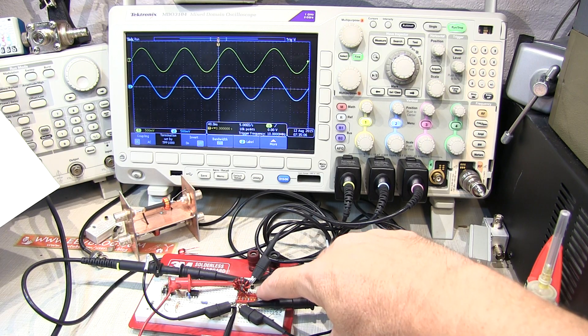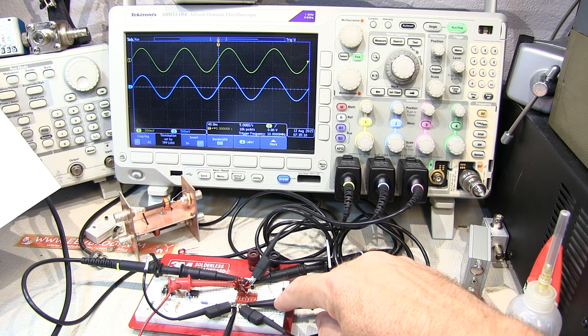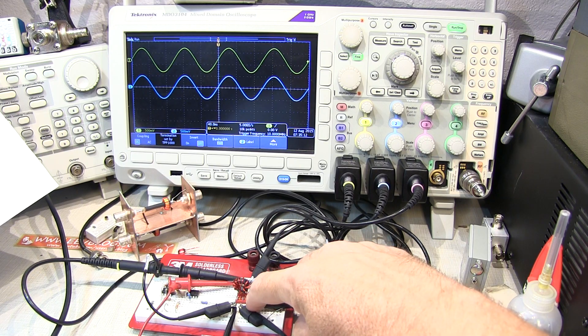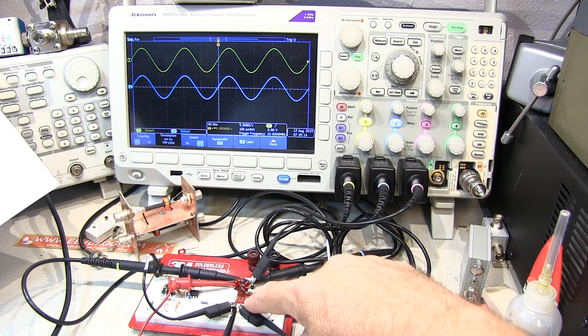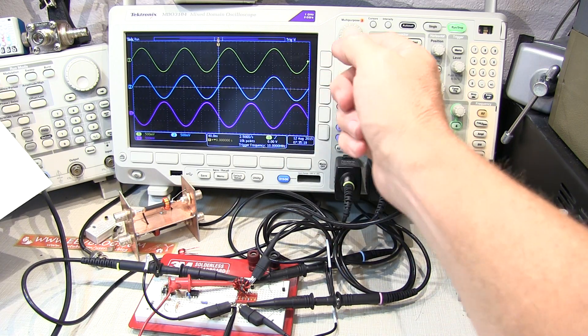Channel three, if we take a look at that, the ground is connected on the dotted side, and our probe is connected on the non-dotted side, so we'll expect that phase to be 180 degrees out. And we turn on channel three, we can see that.